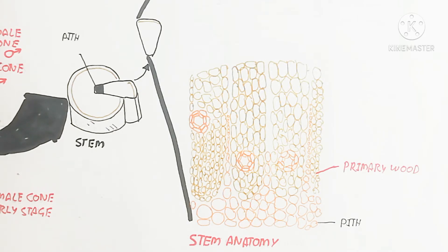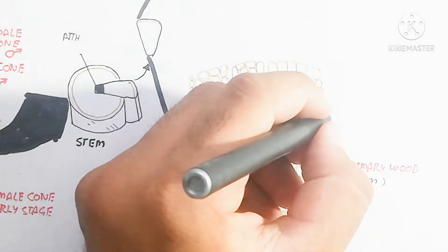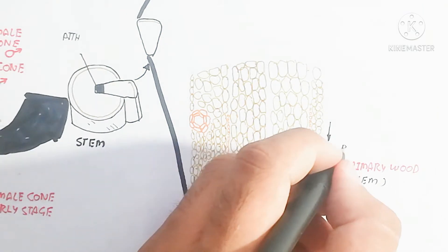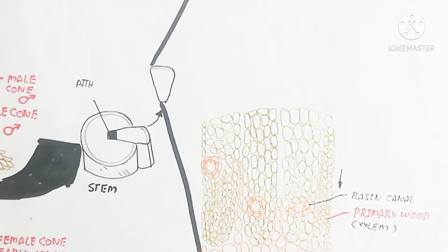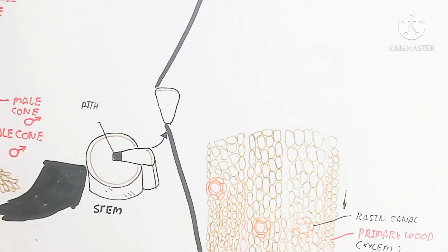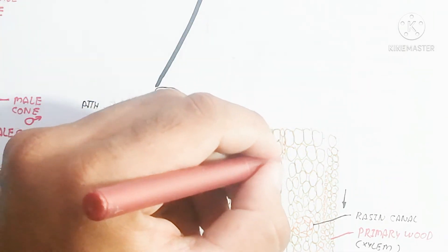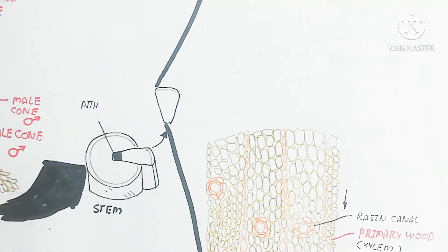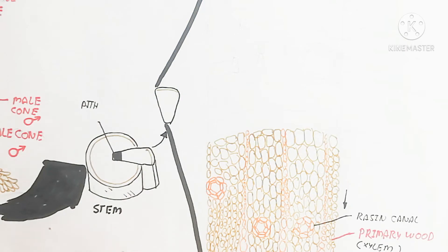The primary wood will ultimately grow; the secondary wood moves inward while the primary wood moves outward. You can see in this figure the secondary medullary rays are present in the upper side.